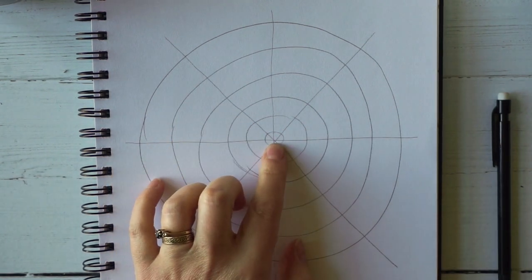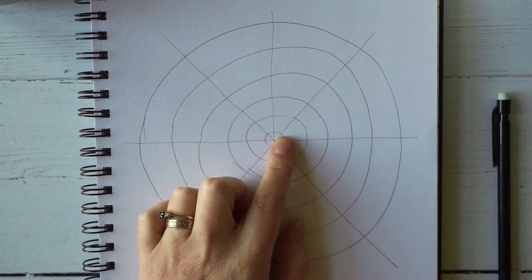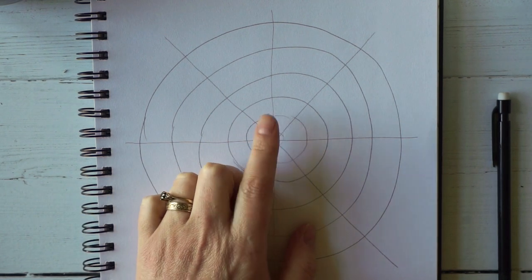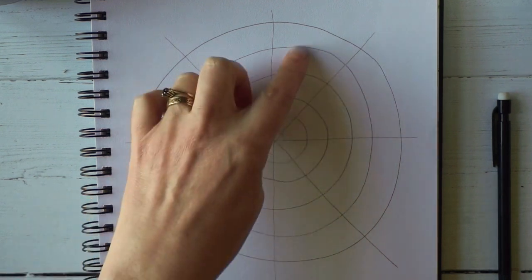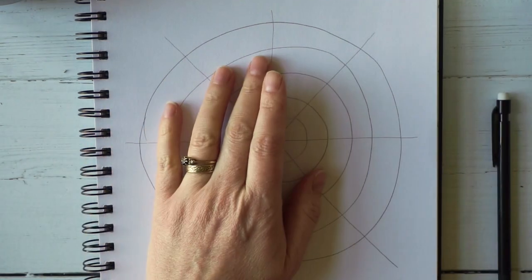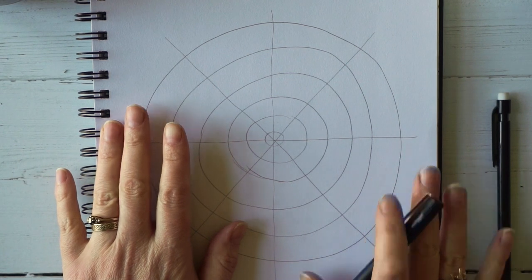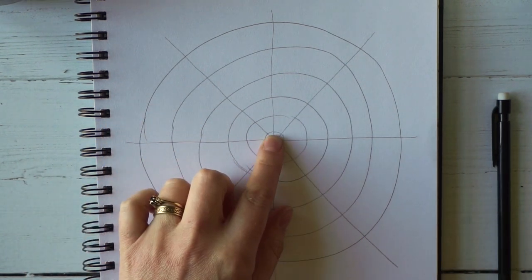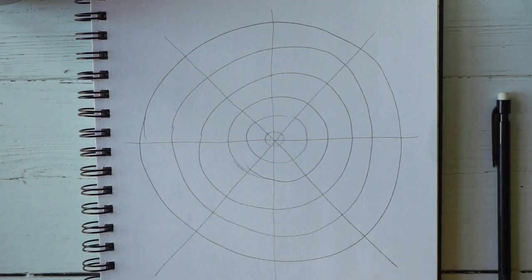All I'm going to do is make a mark in one of the segments, and then make exactly the same mark in all the others. I don't have a plan for this. I don't know what it's going to look like. I'm just going to start in the center, make a mark, fill in the center bit, and then move towards the outside.